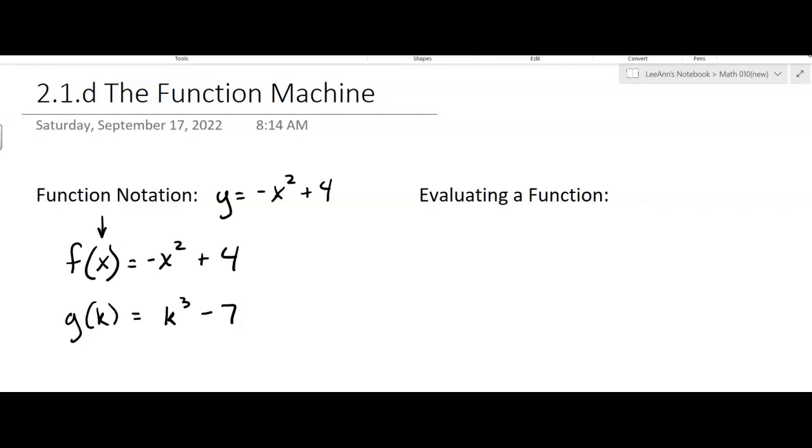So for our purposes, a lot of times they're going to label the functions f of x, and a lot of times it's x for the independent variable. Sometimes we want to be able to evaluate a function. So let's say we have f of x equals negative x squared plus four, and let's say I want to evaluate the function at negative three. Then what I'm trying to find is f of negative three.